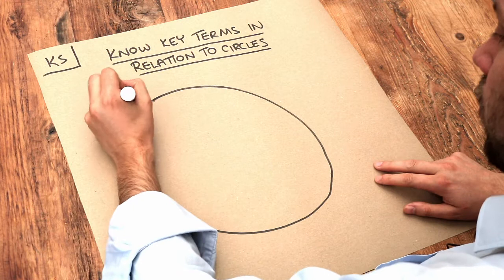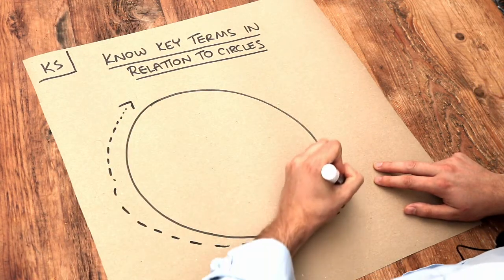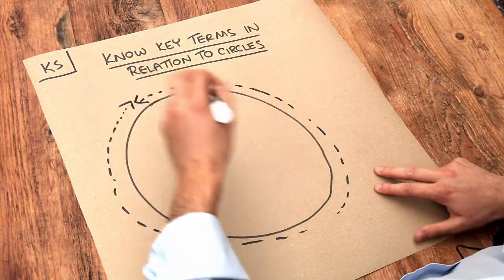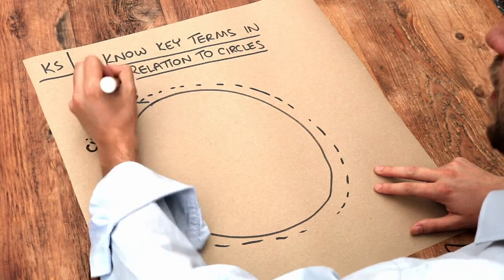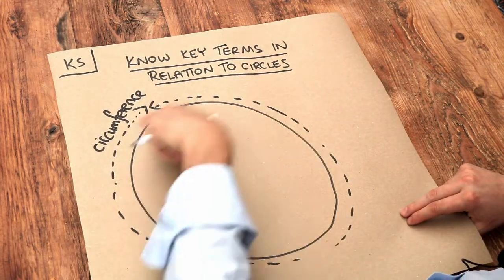Now firstly, there's a special name for the perimeter of a circle. That line that goes round the edge of the circle, the perimeter, is known as the circumference. So when you see the words 'the circumference of a circle,' we just mean the perimeter of the circle.